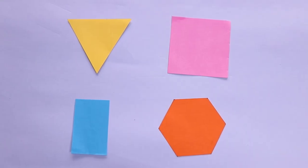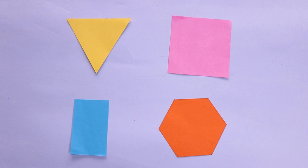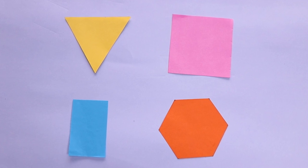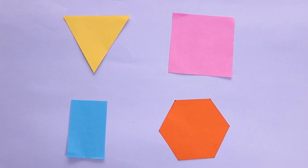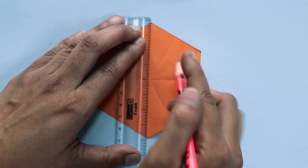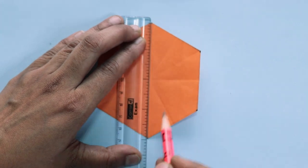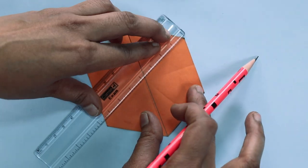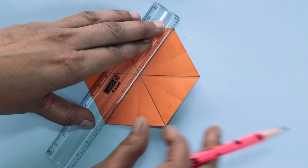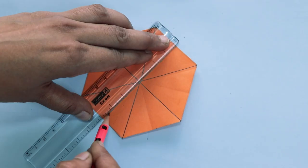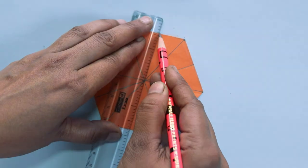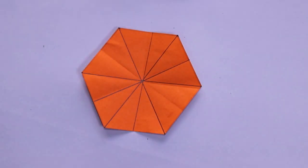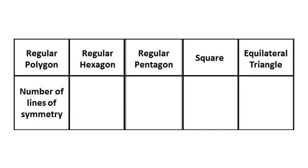For this activity, make a square, triangle, hexagon, and pentagon from colored paper or newspaper. Draw the symmetric line on all polygons with the help of a pencil and a scale. Then complete the following table.